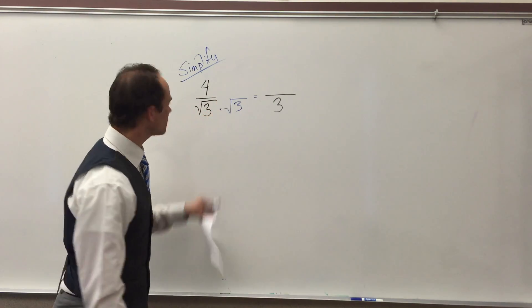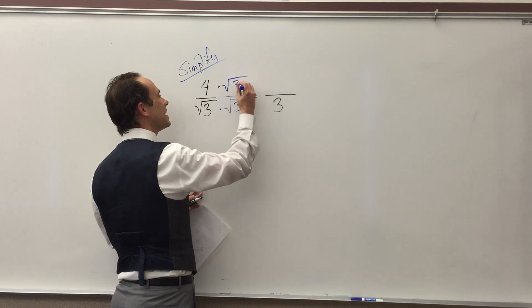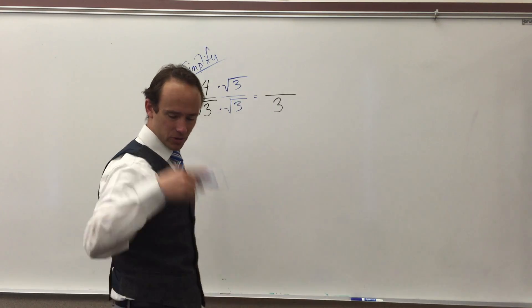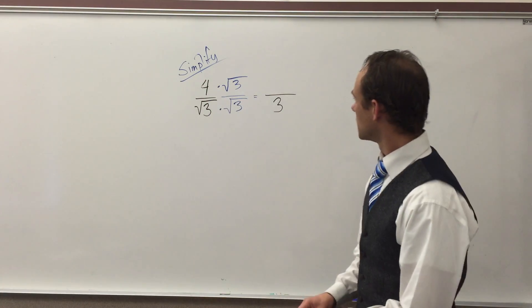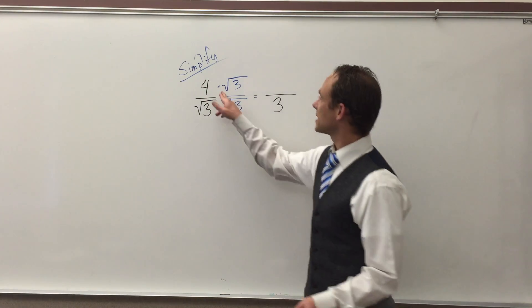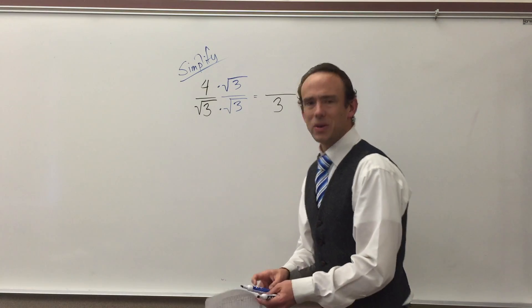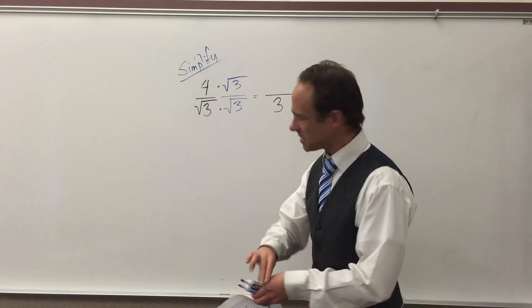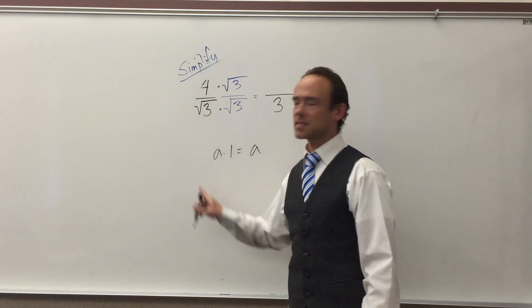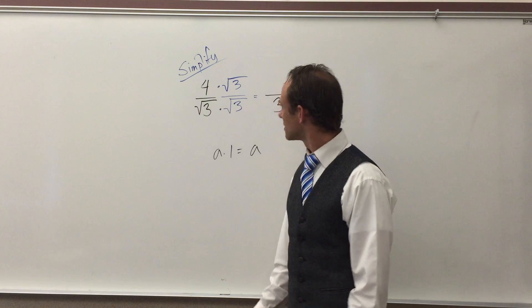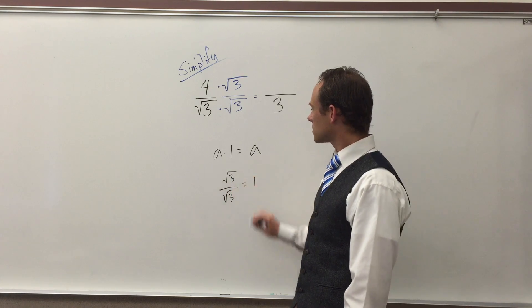This is a fraction, sports fans, and we can't just multiply the denominator without also multiplying the numerator. Whatever we do to the bottom, we multiply the bottom by a value, we got to multiply the top by that same value. Because really what we're doing right here is we're multiplying by one. One of the most important theorems in math is that something times one is itself. And see, now you got to convince yourself that root three over root three is one. So this is really just this times one.